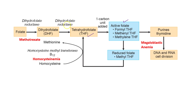Folate is required for synthesis of tetrahydrofolate. This occurs with the help of the enzyme dihydrofolate reductase, which is inhibited by methotrexate. That is why methotrexate is used as an anticancer drug — it inhibits this enzyme and hence inhibits DNA and RNA synthesis.